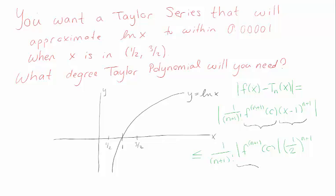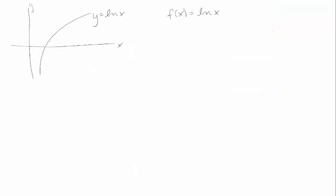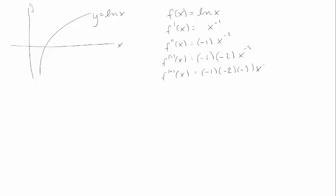Now the big mystery is what the derivatives of natural log of x look like. The first derivative is 1/x, or x to the minus 1. The second derivative is minus x to the minus 2. The third derivative brings down the minus 2, giving minus 1 times minus 2 times x to the minus 3. The fourth derivative is minus 1 times minus 2 times minus 3 times x to the minus 4, and so on.